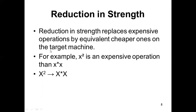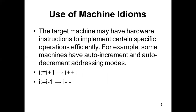Next is reduction in strength — you replace expensive operations with cheaper ones. For example, exponentiation is an expensive operation, so you replace it with multiplication. Finally, use of machine idioms: for example, the statement i = i + 1, when generating three-address code, requires a load, an add, and a store. Instead, you can directly use the machine instruction INC (increment), which is a single efficient instruction. This is use of machine idioms — using effective and efficient instructions during target code optimization.